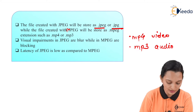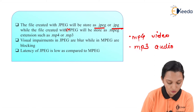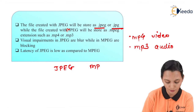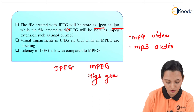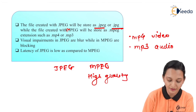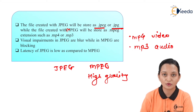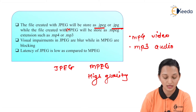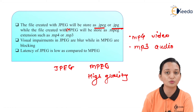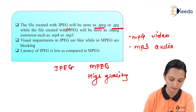The visual impairments in JPEG appear as blurring, while in MPEG they appear as blocking. If we compare JPEG and MPEG based on output quality, MPEG provides higher quality output. This is because JPEG impairments cause blurring whereas MPEG impairments result in blocking, which allows MPEG to achieve higher quality output overall.